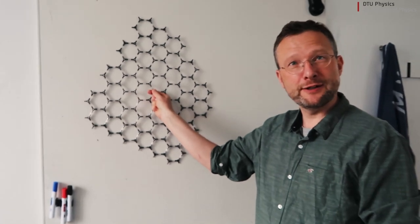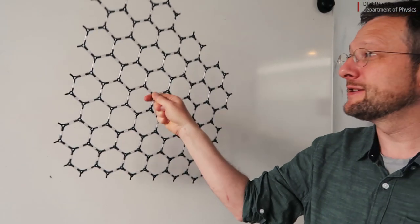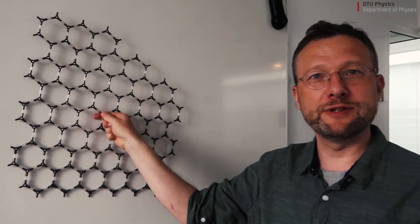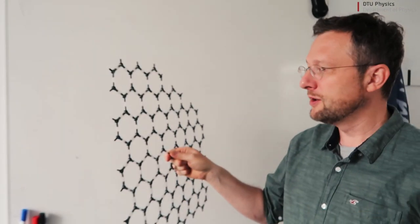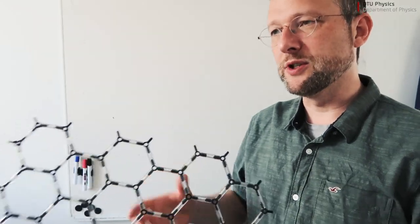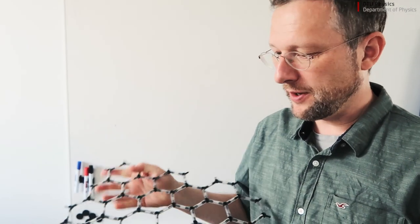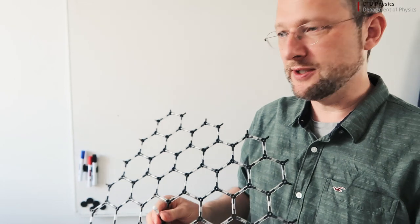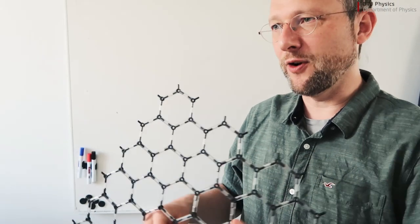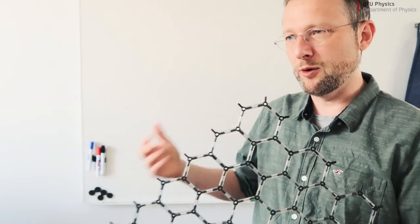Okay, so this is graphene. It's one atom thick. It's a material which conducts electricity extremely well. And we want to make use of it for new electronics. But at the same time, we can do calculations so fast that it actually follows what we're doing, basically our motion.